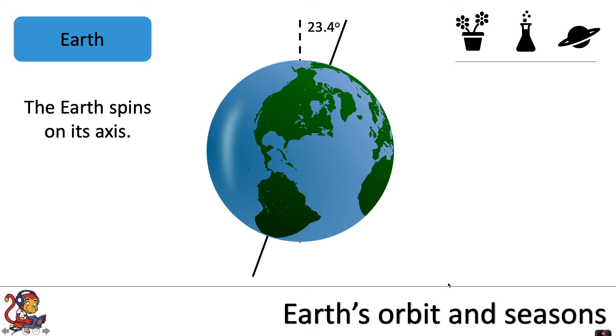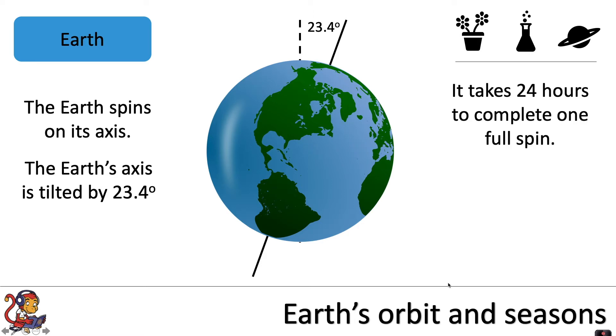The earth spins on its axis. The earth's axis is tilted by 23.4 degrees. It takes 24 hours to complete one full spin.